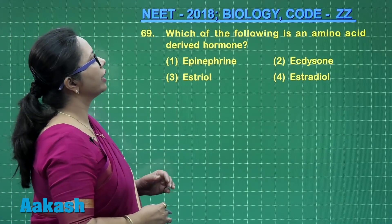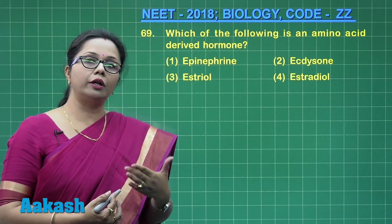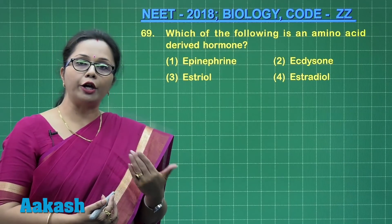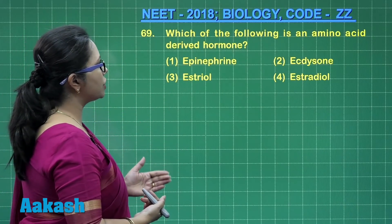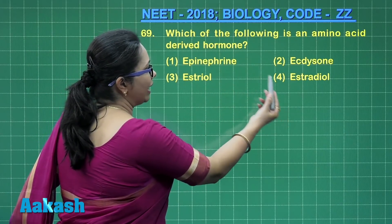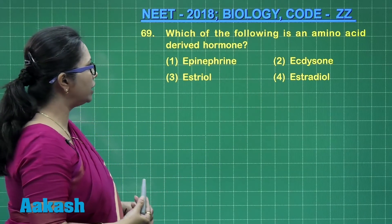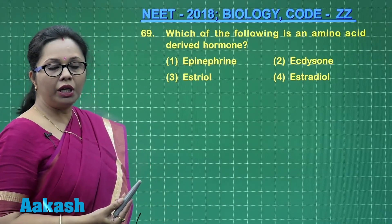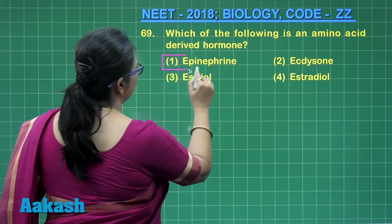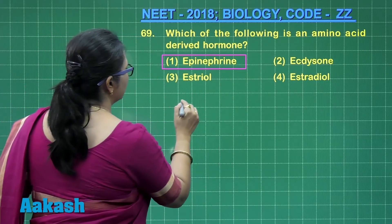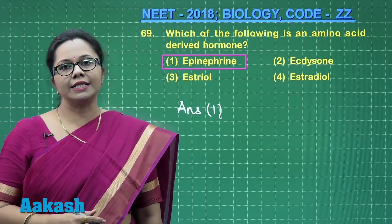Question 69: Which of the following is an amino acid derived hormone? Hormones can be biogenic amines, peptides, proteins, or steroids. Estriol and estradiol are estrogens — steroid derivatives. Ecdysone is an insect hormone, also a steroid. Epinephrine is a biogenic amine synthesized from the amino acid tyrosine, so the answer is epinephrine, option 1. Moving on to question 70.